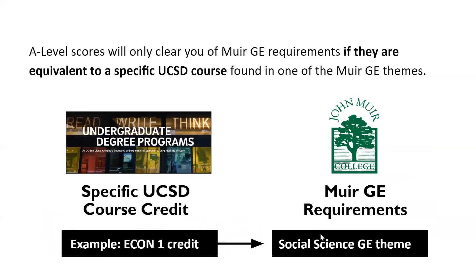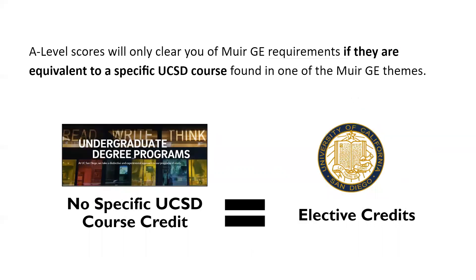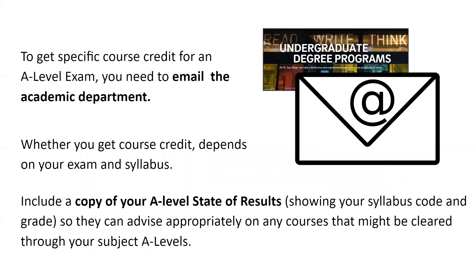Second, if you do earn credit, then you may apply this credit towards Muir GE requirements only if what you took is equivalent to a specific UCSD course, and if that course is on our approved GE list. Otherwise, your A-level credits will count as elective credits towards your degree. To get specific course credit for an A-level exam, you need to contact the academic department where you want that credit from. For instance, if you took A-levels in Economics, contact the UC San Diego Economics Department. Depending on the exam and the syllabus, you may be granted equivalent credit by the academic department. When you email the department, include a copy of your A-level exam statement of results showing your syllabus code and grade, so they can advise you appropriately.